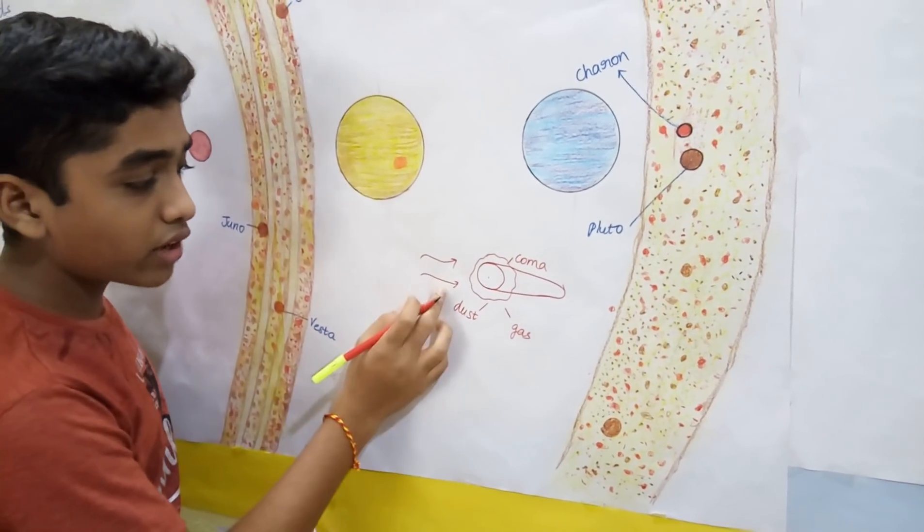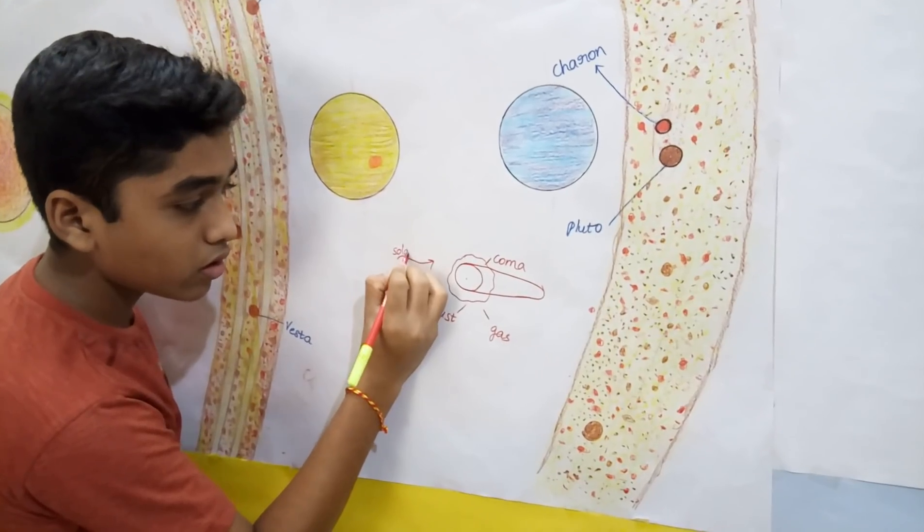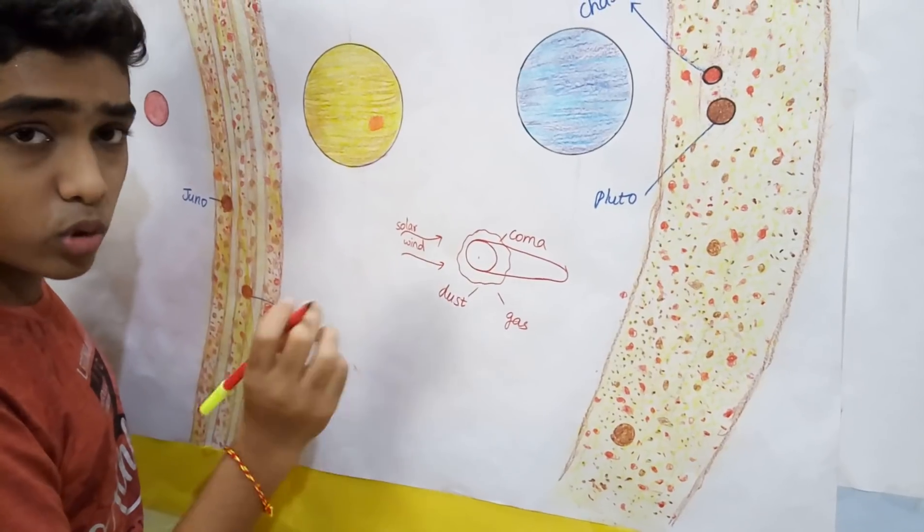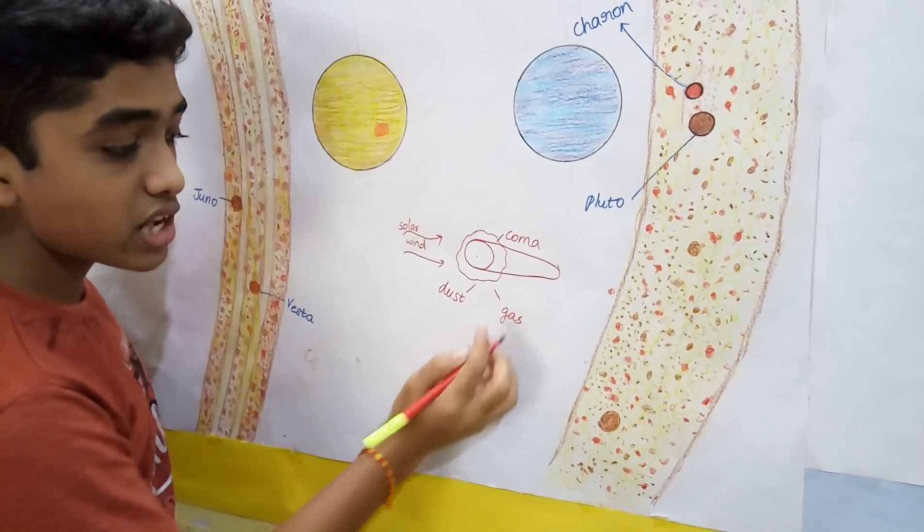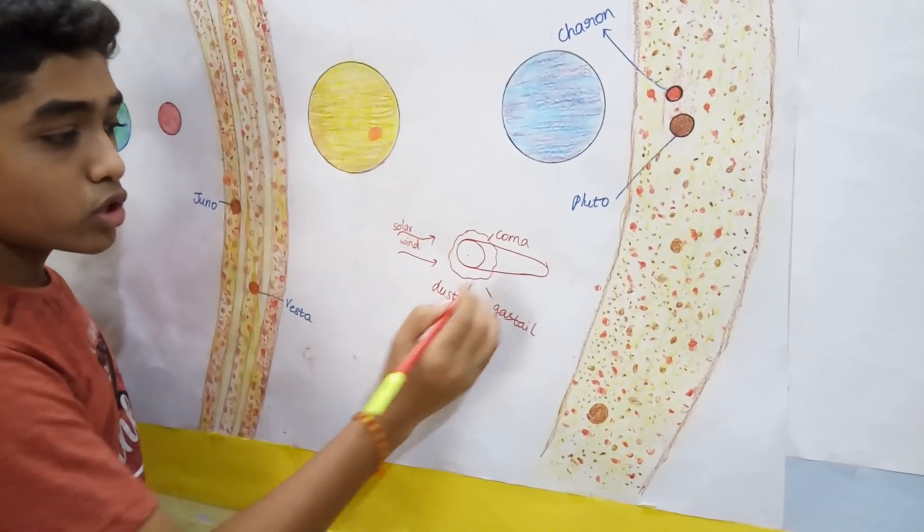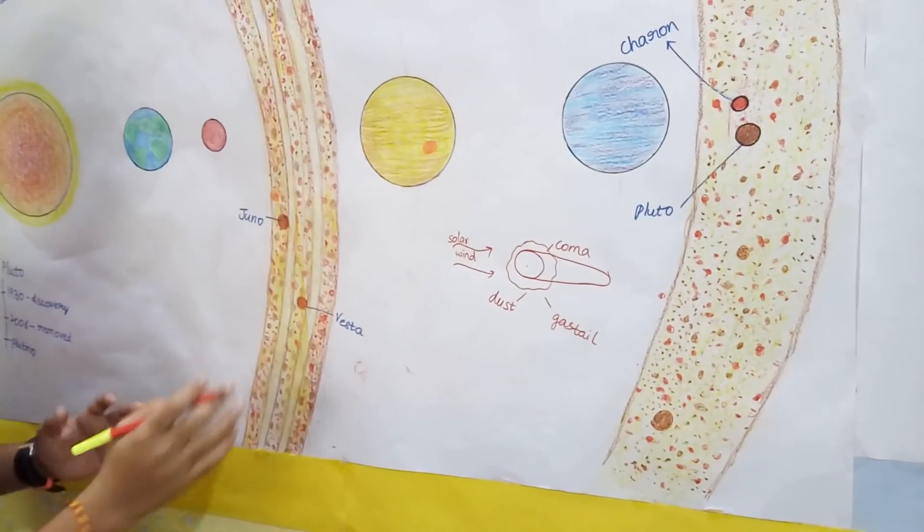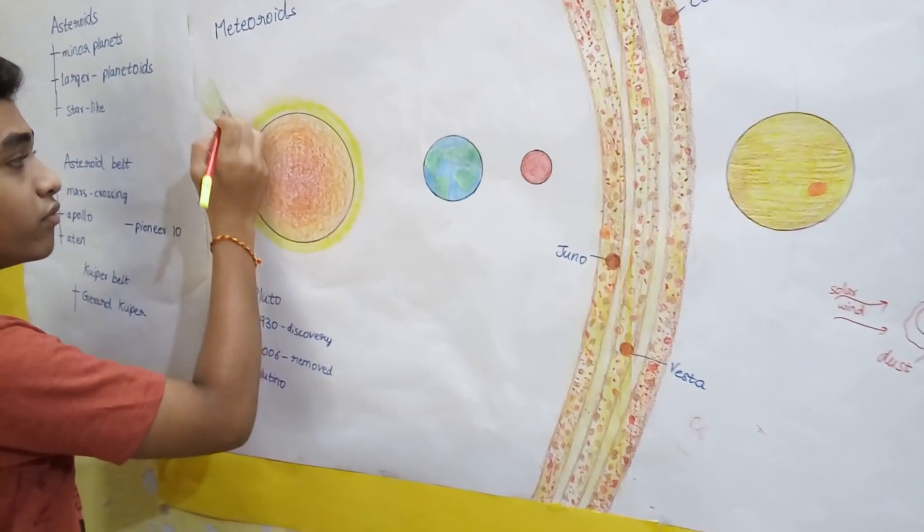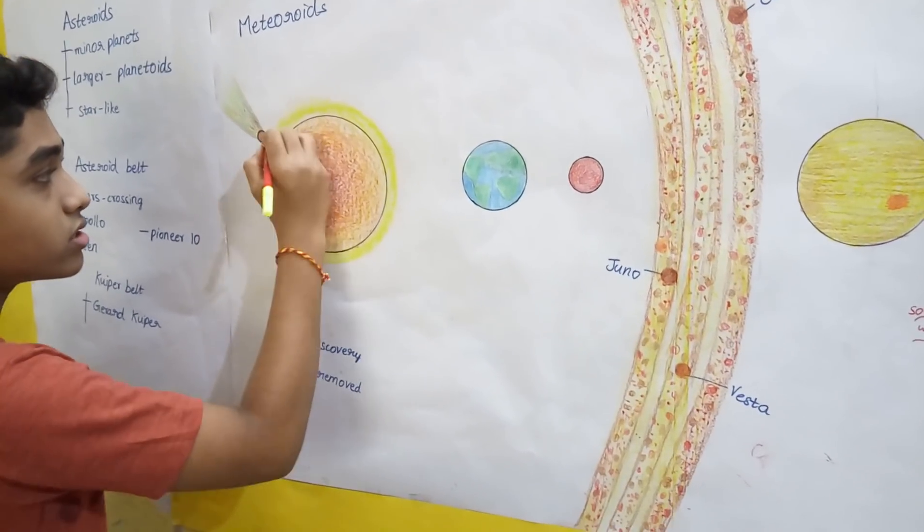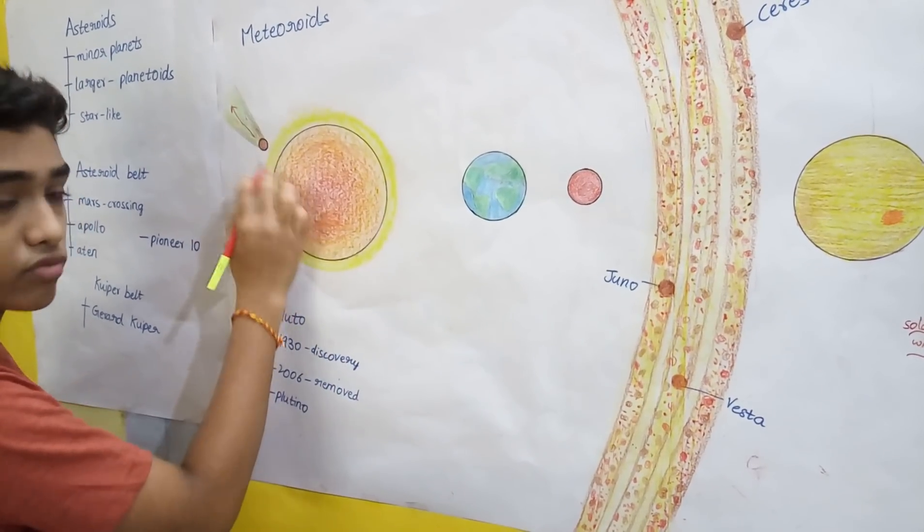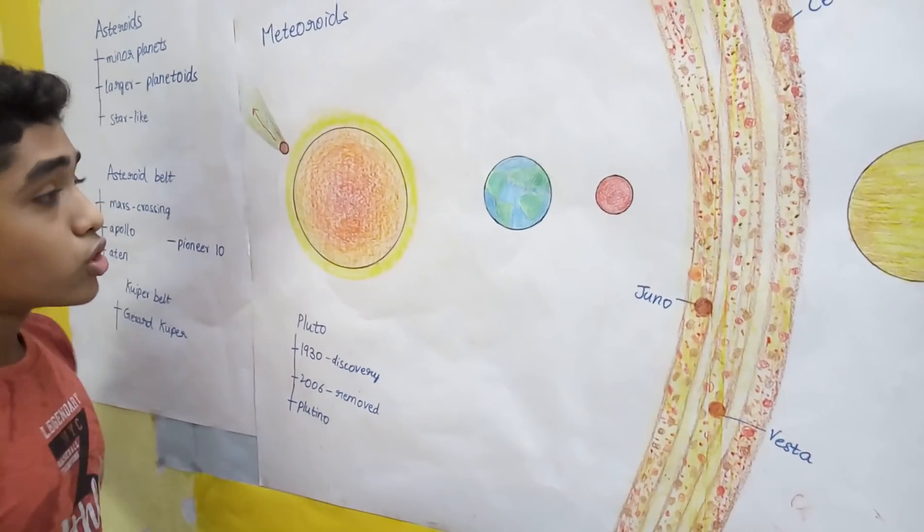Dust is affected by the sunlight. We know that solar wind is more effective than the sunlight, so in most cases of comets, we find the gas tail more than dust tail. As solar wind blows this gas tail away, we find that the tail is always opposite in the direction, opposite to the direction of the sun.